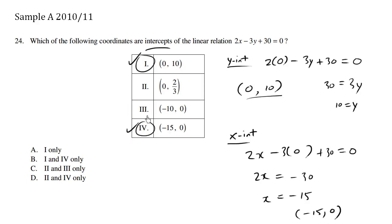So choice 1, choice 4 are the x and y-intercepts, and these other points are not x or y-intercepts. So the correct answer is going to be 1 and 4, which happens to be choice B.